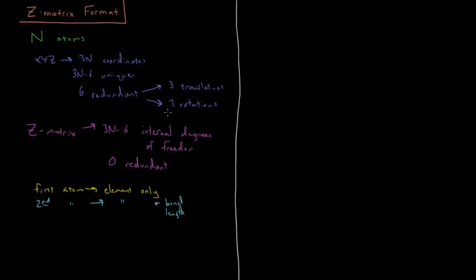Now we've gotten rid of five of those redundant coordinates, so we're getting rid of the last one with the third atom. Third atom has element and bond length and a bond angle. The three atoms here form a plane, so you can't put this atom anywhere that'll make it outside of that plane because three non-linear points define a plane. We're getting rid of that third and final redundant rotation.